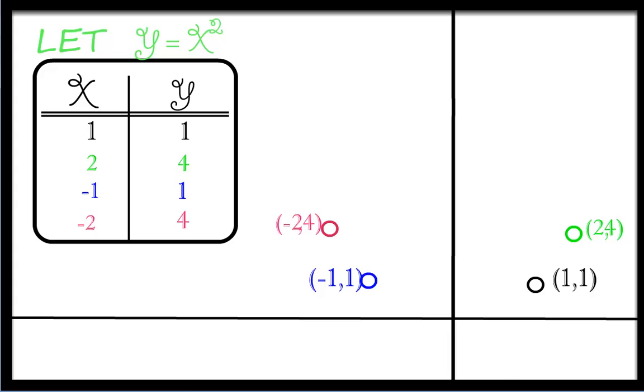Do you see a pattern? For every positive x, the y value is the same for its negative counterpart as well. Also, there will be no negative y, as we should expect. Now let's connect these dots.